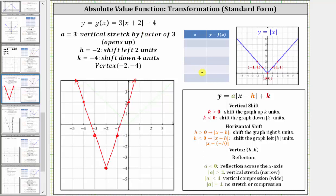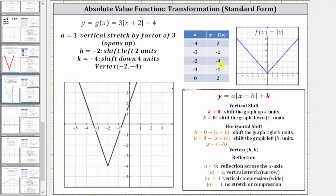If we were to use a table of values, we would want to have the value of h in the middle of the table. Notice h is negative two, so we select two x-values less than negative two and two values greater than negative two — for example, negative four, negative three, negative one, and zero — to get points to the left and right of the vertex. We've already completed the table of values and graphed the function using graphing software, so you may want to verify that the table is correct and each ordered pair is a point on the final graph. I hope you found this helpful.